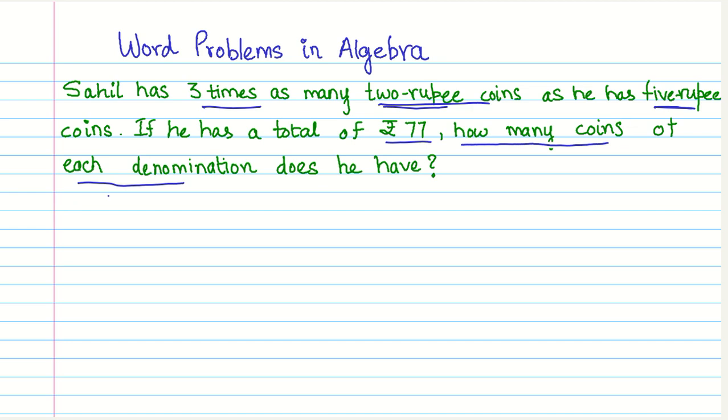But again we have two unknowns over here, but at the same time we also have the relationship between those two unknowns. We know that the two rupee coins are thrice in number as compared to the five rupee coins.